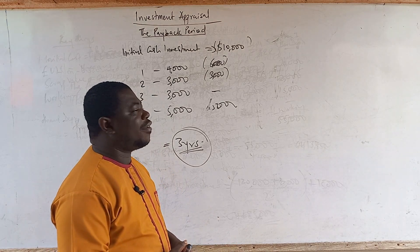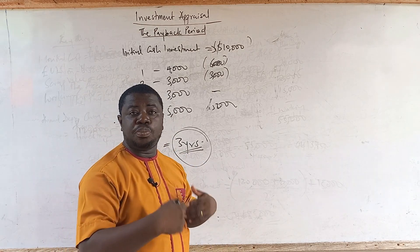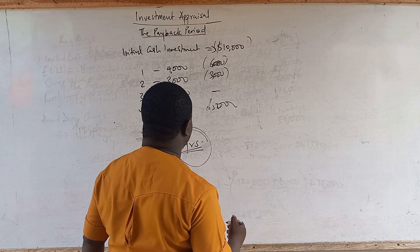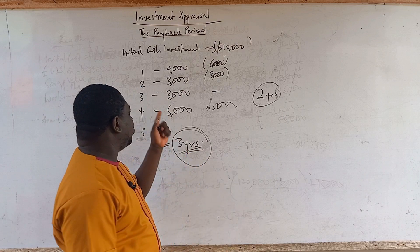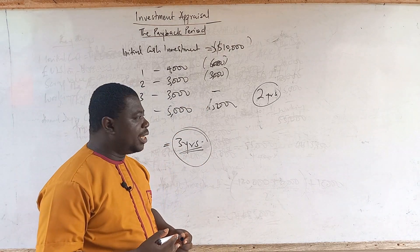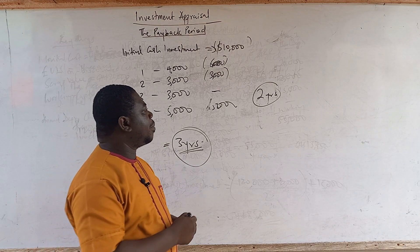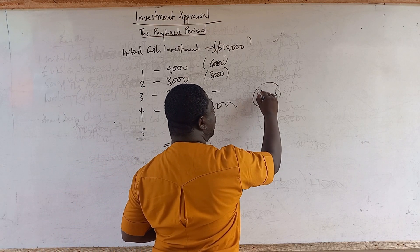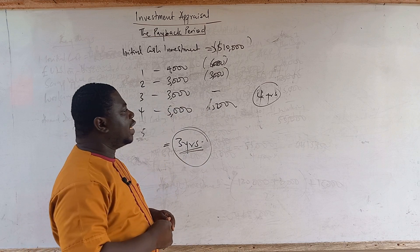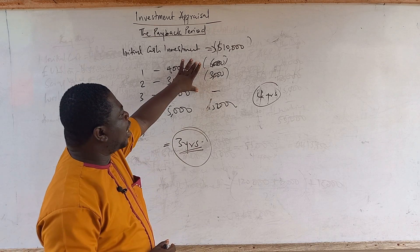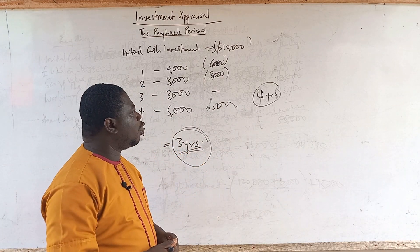Every company will have, as a matter of policy, a number of expected years for the project to pay back the initial investment. If we set a target of two years and the project pays back in three years, the decision rule is to drop the project. But if the expected minimum is four years and the project recovers the investment at the end of year three, the payback period is shorter than expectation, so the project should be accepted.